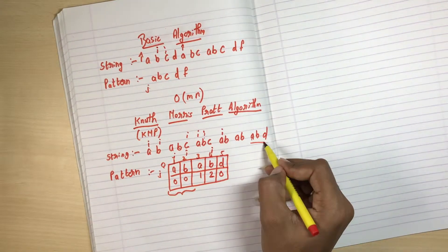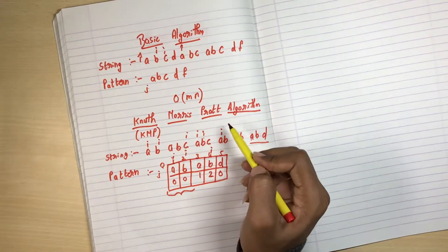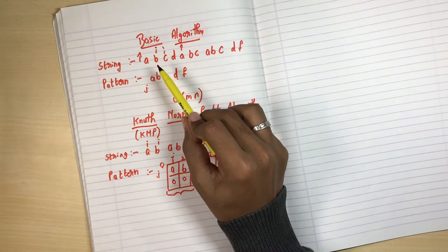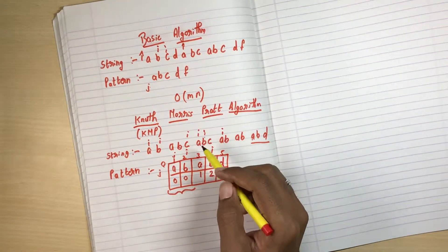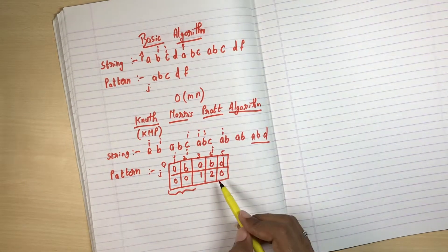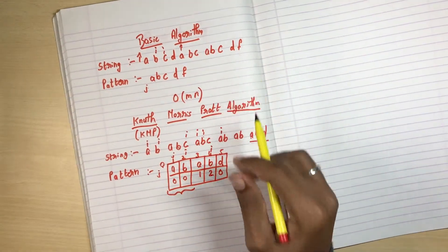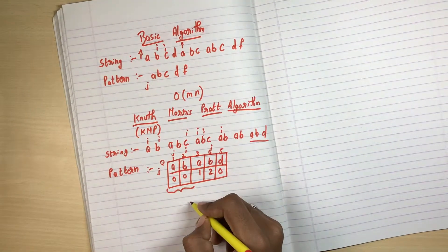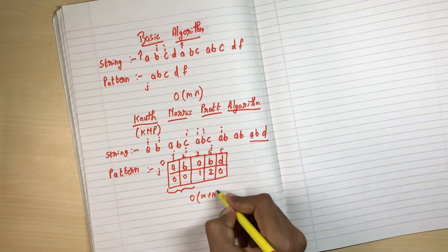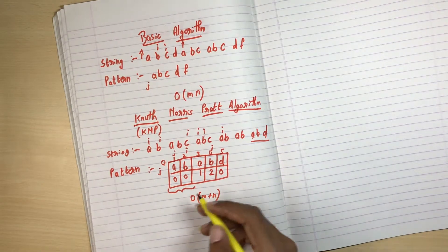So the difference between the basic algorithm and the Knuth-Morris-Pratt algorithm is that the basic algorithm keeps going back to the first, second, or third position, whereas in the KMP algorithm it starts from the next position based on the failure table value — we don't need to go back to the first position again. This is the advantage of the KMP algorithm, and its time complexity is O(M+N). This concludes the explanation of the Knuth-Morris-Pratt or KMP algorithm. Thank you.